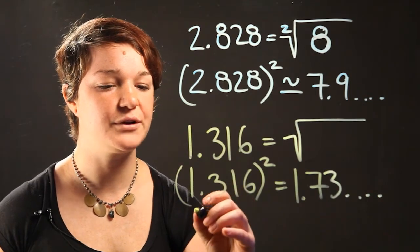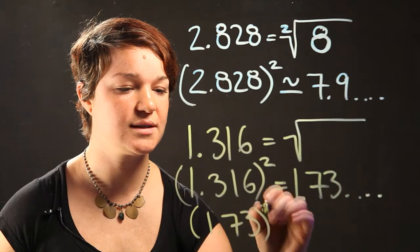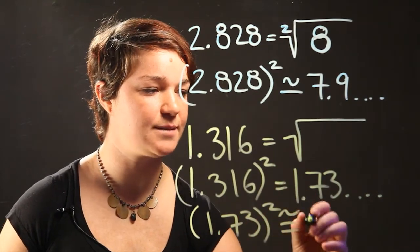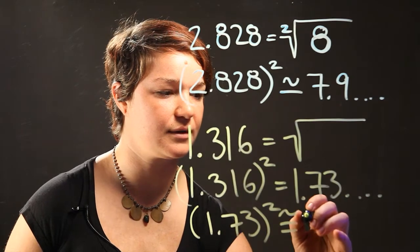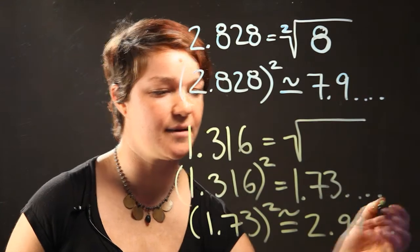So what we're going to figure out is that you need to take 1.73 squared again and in this case you get an approximation of 2.99 dot dot dot dot.